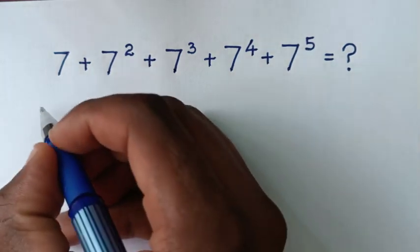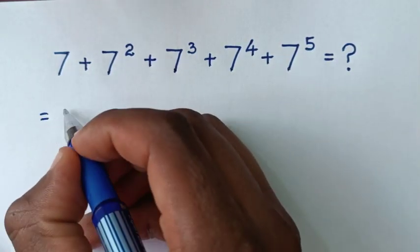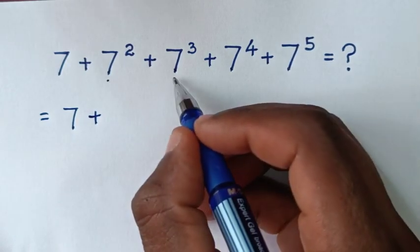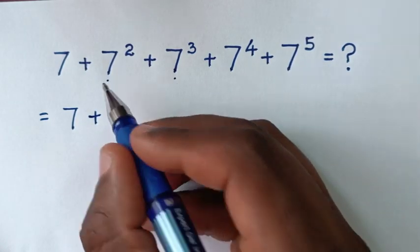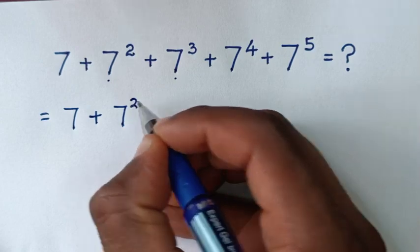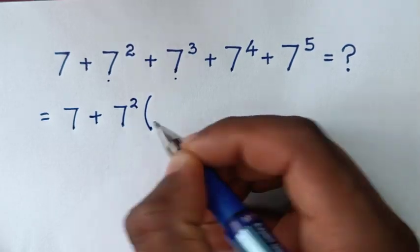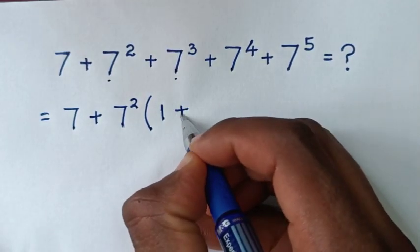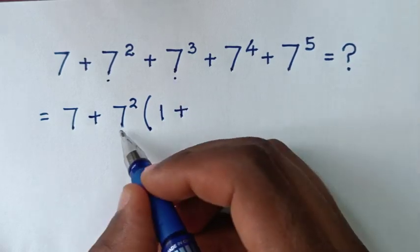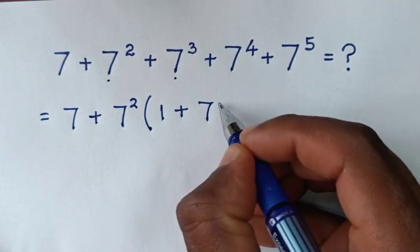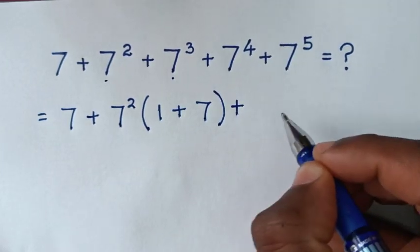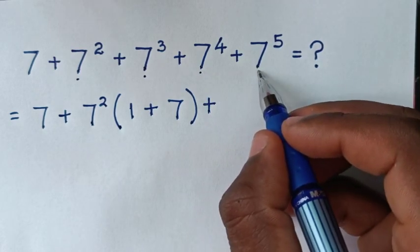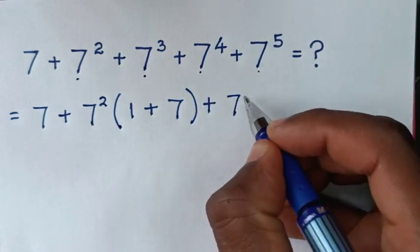So it will be equal to 7, then plus from here 7 square plus 7 power 3 — 7 square is common. So we take 7 square out of bracket: 7 square divided by 7 square is 1, plus 7 power 3 divided by 7 square is 7. Then plus from here 7 power 4 plus 7 power 5 — 7 power 4 is common.